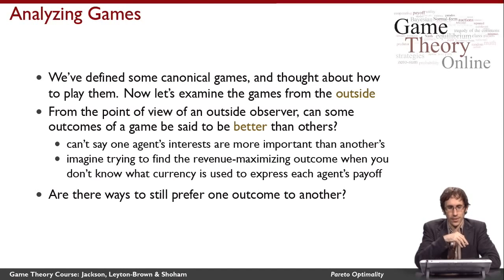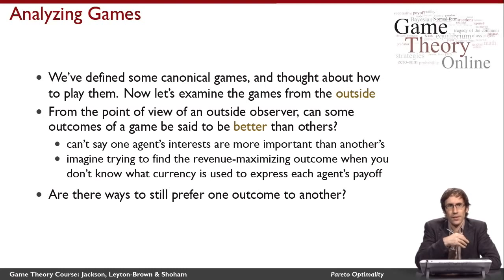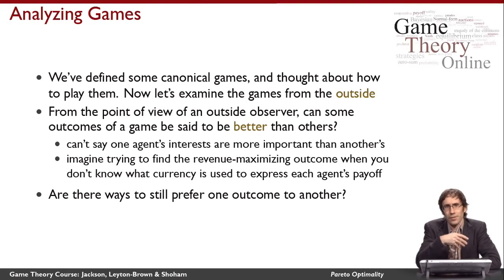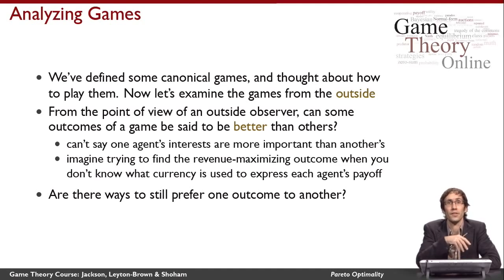Well, let me give you a bit of a hint. You can't say that one agent's interests are more important than another agent's interests, because I don't know how important the different agents are. And it turns out I can't even say what scales their utilities are expressed in — there isn't necessarily a common scale for utility between agents. So the problem of evaluating a game outcome is kind of like trying to find the payoff-maximizing outcome when I'm going to be paid in different currencies and I don't know what those currencies are.